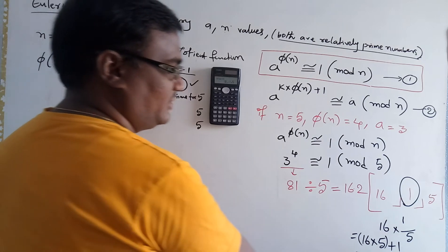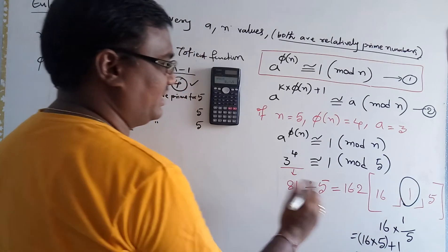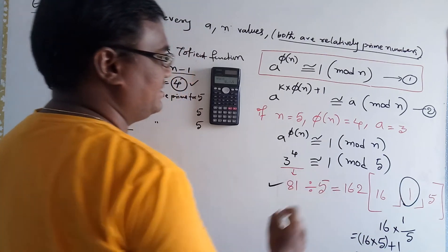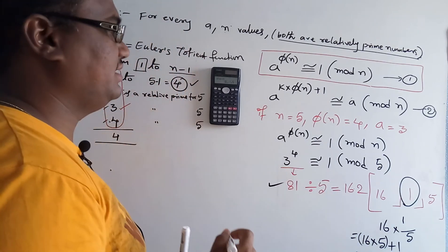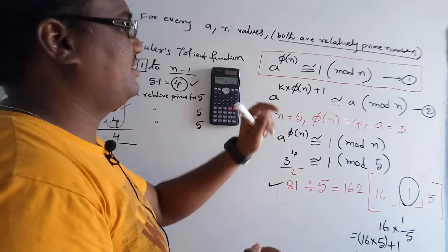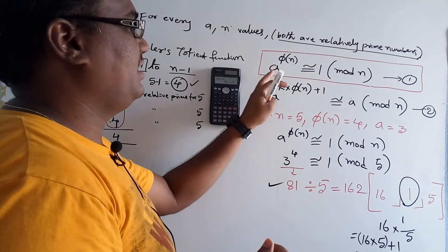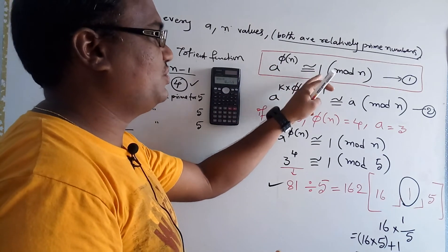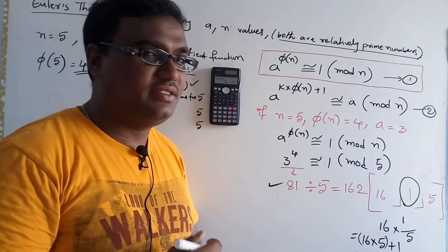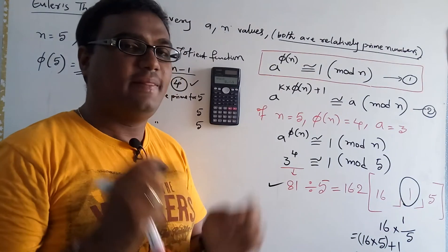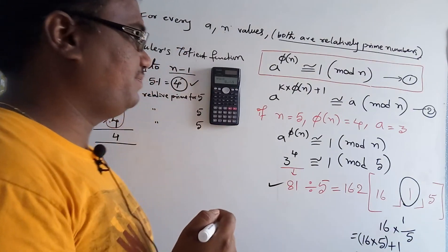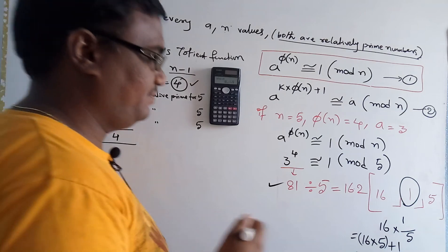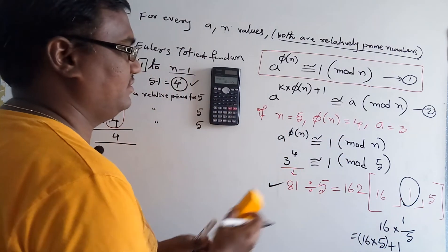So the remainder is 1, which means 3^4 ≡ 1 (mod 5). This 100% satisfies Case 1: a^φ(n) ≡ 1 (mod n).